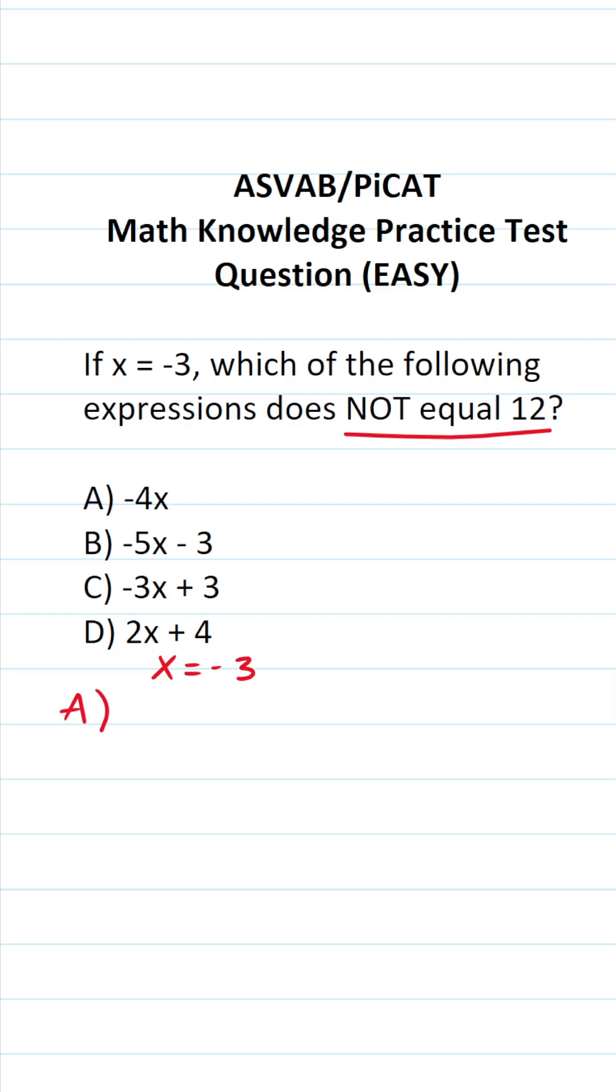Let's start with a. A says negative 4x, we know x is negative 3. So this is going to be negative 4 times negative 3. A negative times a negative is going to be a positive. More specifically, negative 4 times negative 3 is going to be positive 12. So a does equal 12.